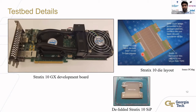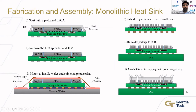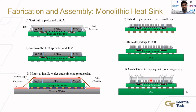On this test bed we implemented the microfluidic cooling solution using the following fabrication and assembly flow: we started with the packaged FBGA, removed the heat spreader and thermal interface material, mounted it on a carrier wafer, and used conventional photolithography to pattern micro-pin-fin heat sinks on it. We performed an optimized Bosch process etch to create micro-pin fins on the back side of the devices, then reattached it to the development board with 3D-printed capping structures and fluid delivery ports bonded using epoxy.